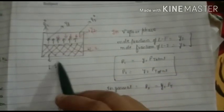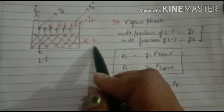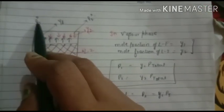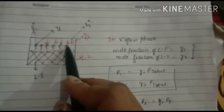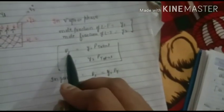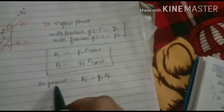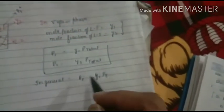Now we will see the composition of the vapor phase only. Let us suppose this is a container. The black one is liquid 1 and the partial pressure of liquid 1 is P1. The mole fraction of liquid 1 in the vapor phase is Y1. The vapor pressure P1 equals Y1 times P total. In general, we can say if more than two liquids are present in the solution, then Pi equals Yi times P total.